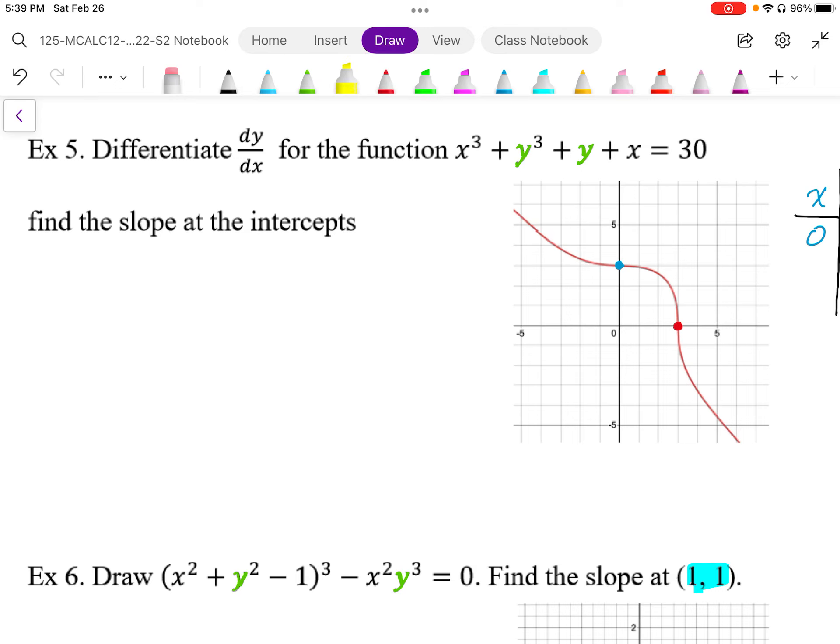As we let x get large, we can see that it's basically these two terms that dominate, and we get x cubed equals negative y cubed, or x equals negative y.